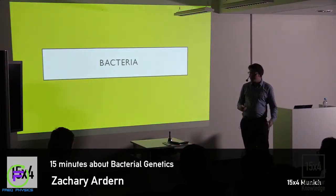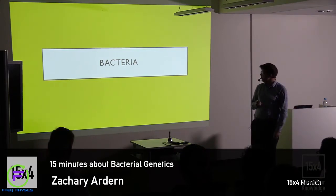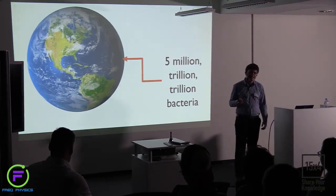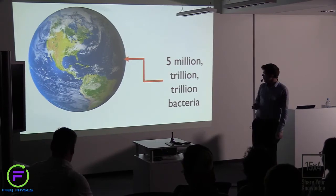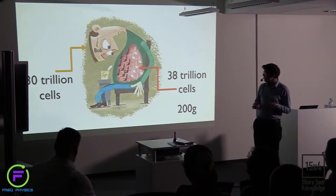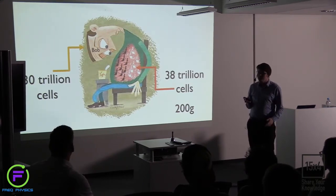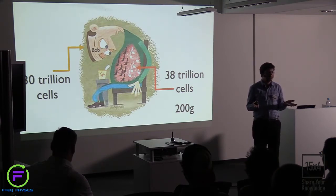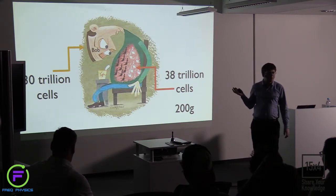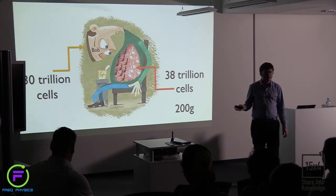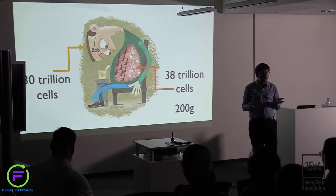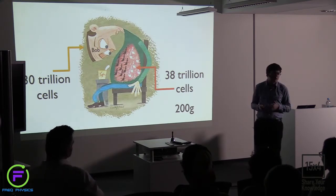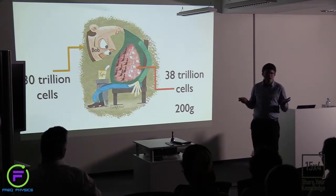So why should we care about bacteria? The first answer is because there's a lot of them — five million trillion trillion bacteria, something like that, on planet Earth currently. Particularly interesting for us is that a lot of them are actually inside you. Your average guy Bob is made up of around 30 trillion human cells, but within Bob we find there are actually 38 trillion bacterial cells. So technically he's more than half bacteria on a cell count, though the bacteria are quite small and only weigh a total of 200 grams.